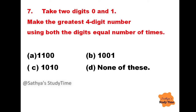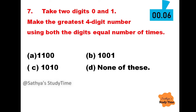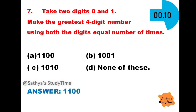Question 7: Take two digits 0 and 1. Make the greatest four-digit number using both the digits an equal number of times. Your time starts now. The answer is 1100.